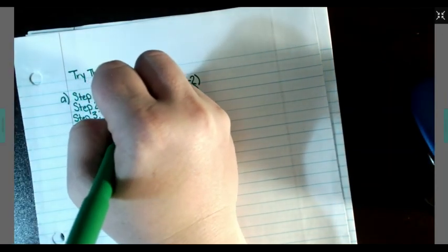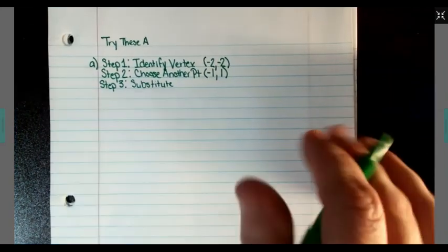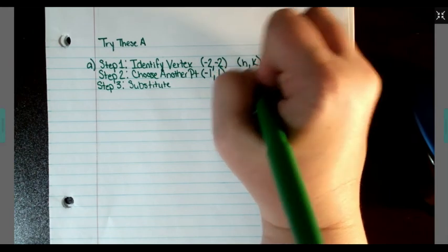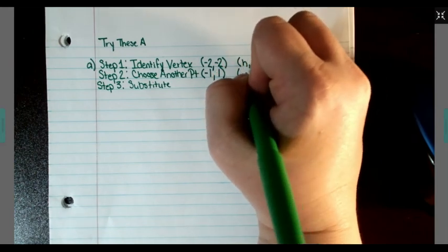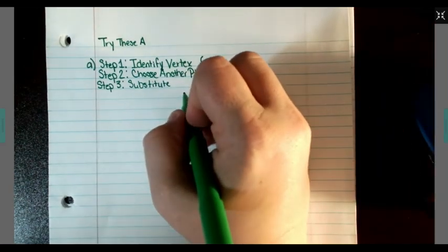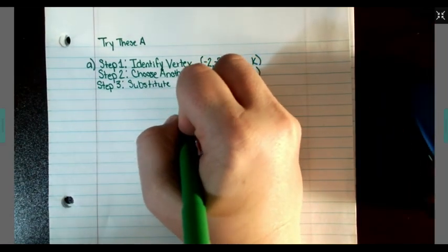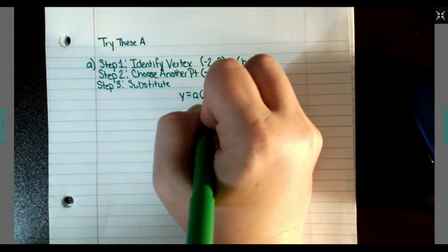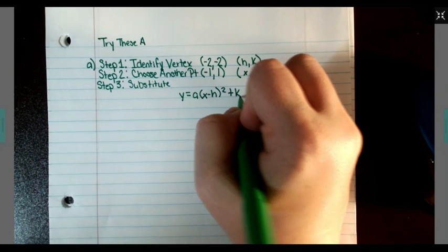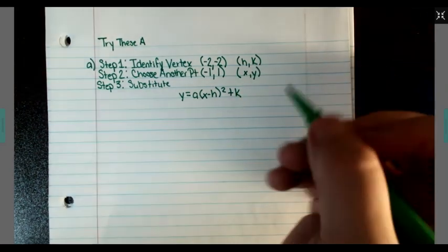Step 3: Substitute. These are H, K. This is X, Y. The equation is Y equals A times X minus H to the second power plus K. So we're going to substitute what we know in.